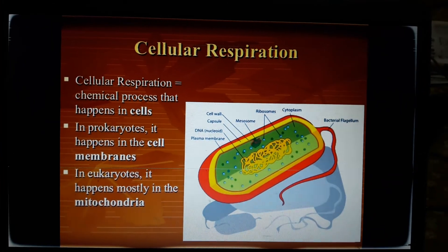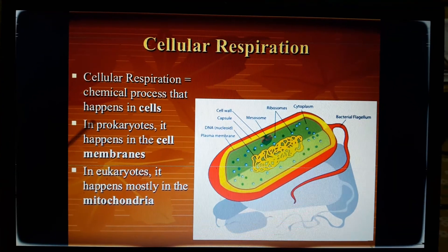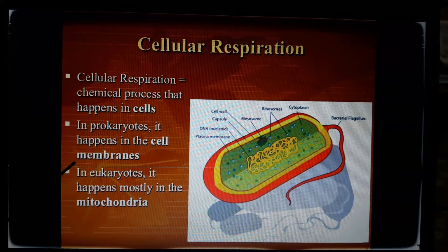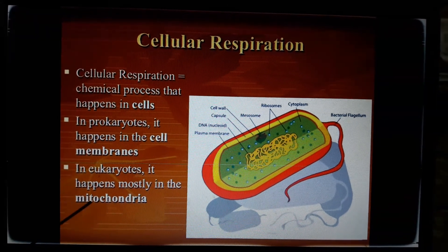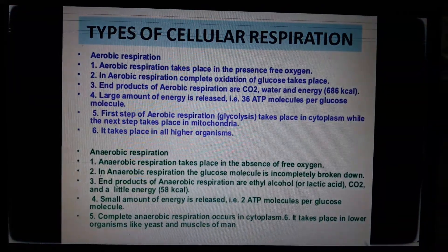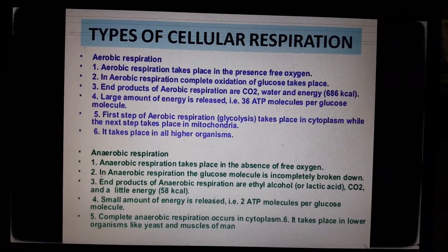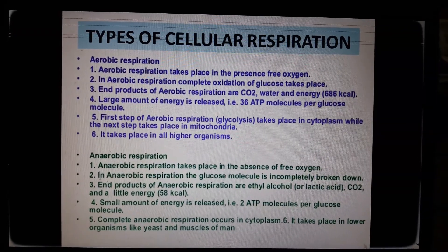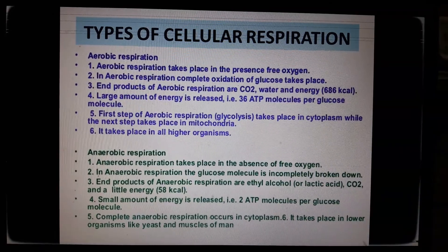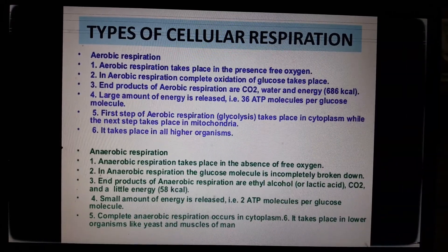Cellular respiration is a chemical process that happens in cells. In prokaryotes, it happens in the cell membrane, and in eukaryotes, it happens mostly in the mitochondria. Depending on whether oxygen is utilized or not, cellular respiration can be divided into two types: aerobic respiration and anaerobic respiration.